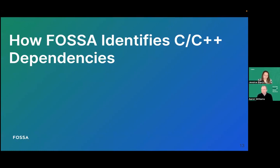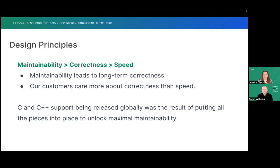We talked about C and C++ dependencies and how we include them. Now we'll talk about how FOSA identifies them. Our design principles with our C and C++ support are: maintainability is better than correctness is better than speed. This is a common talking point for us — we think that maintainability leads to long-term correctness, and our customers care more about correctness than speed. What you're seeing today is kind of the result of those principles, where we're focusing on maintainability first and then correctness. This product is still in early stages.